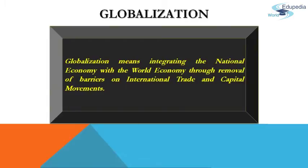To integrate the Indian economy with the world, the Union budget 1992-93 made the Indian rupee partially convertible, and then the rupee was made fully convertible in the 1993-94 budget. A new 5-year export-import policy for 1992-97 was announced by the government to establish the framework of globalization of India's foreign trade. The policy removed all restrictions and controls on external trade and allowed market forces to play a greater role in respect of exports and imports.